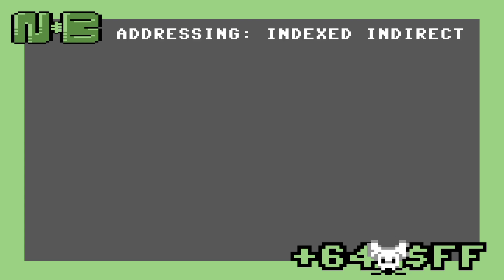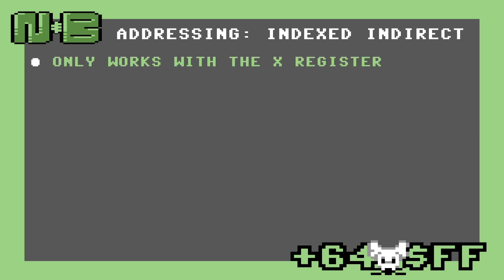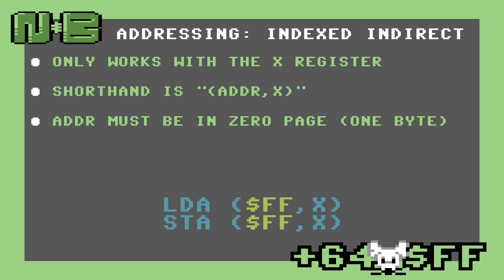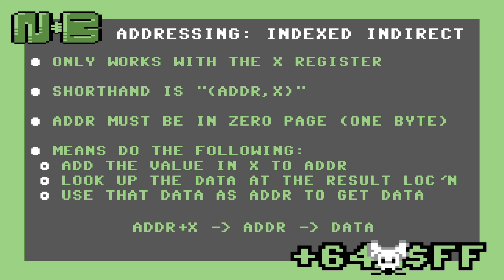The first of the two is the indexed indirect addressing mode — this is the mode labeled indirect X. This mode only works with the X register. Unlike other modes, this mode is written with parentheses around the address and the X. This mode works relative to zero-page, which means the address given must be a single byte. What this mode actually does is: add the value in X to the address, look up the data at the address of that result, and then use that data as the address to load from.